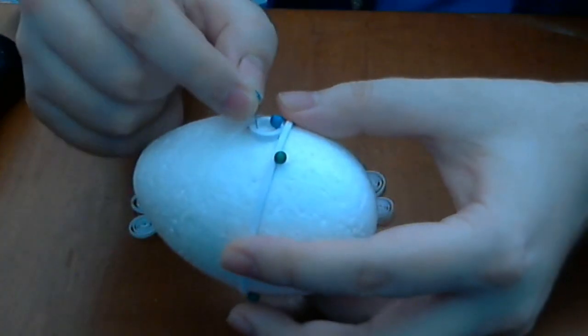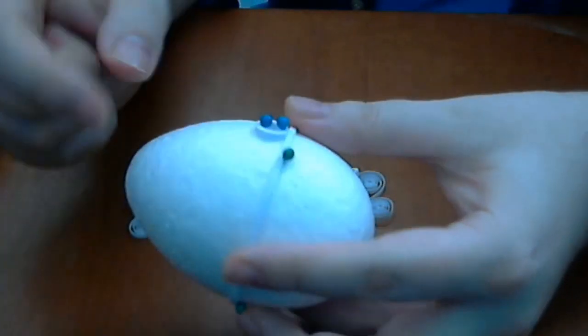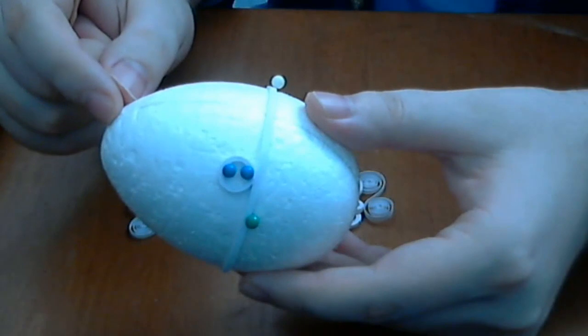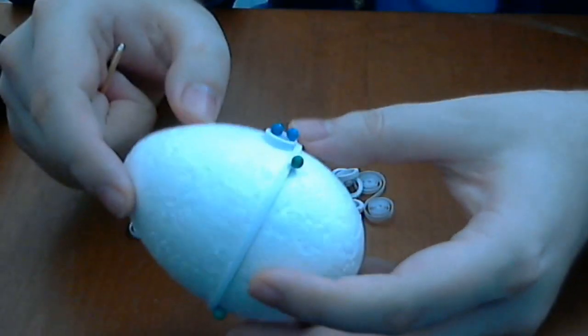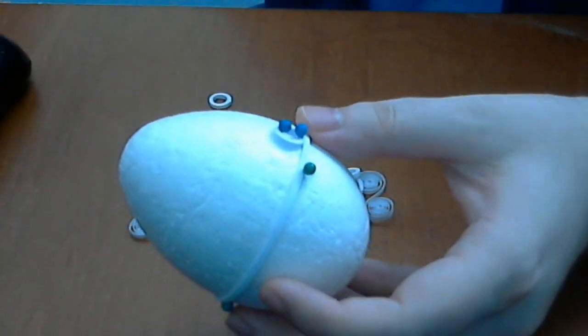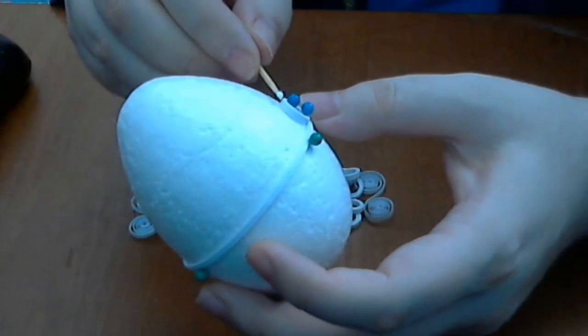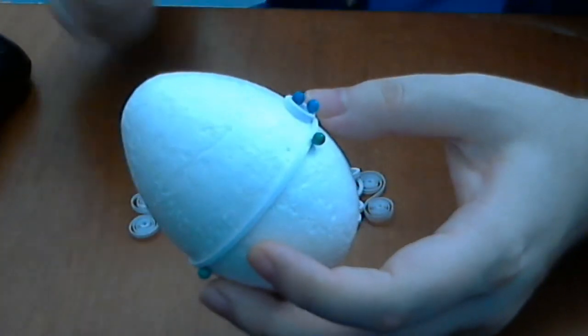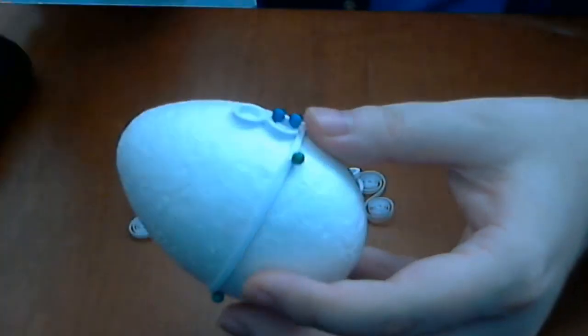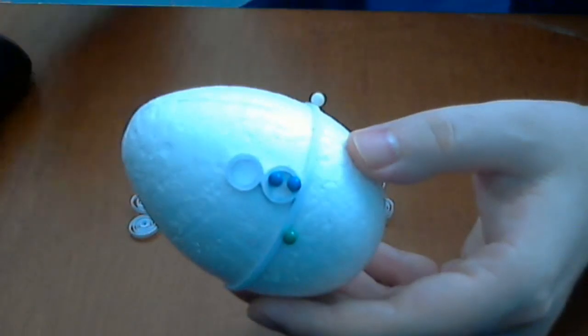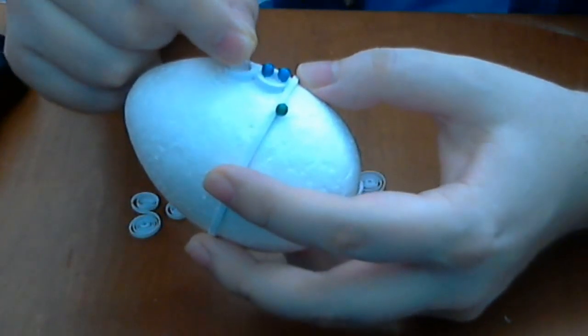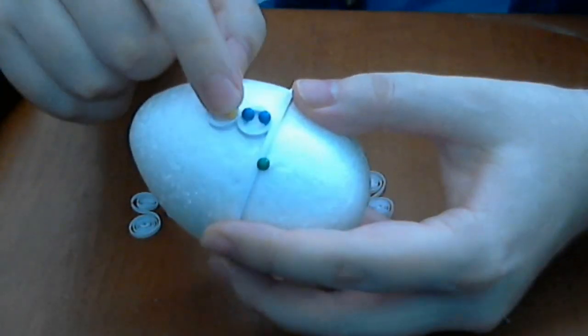We will put another one here. Remember that these 3D quilling models are very hard to make and take a lot of time. You must have a lot of patience. Next we will put another glue here and then connect another empty circle quilling piece. If you do not know how to make this piece, search on my channel and you will find such a tutorial.